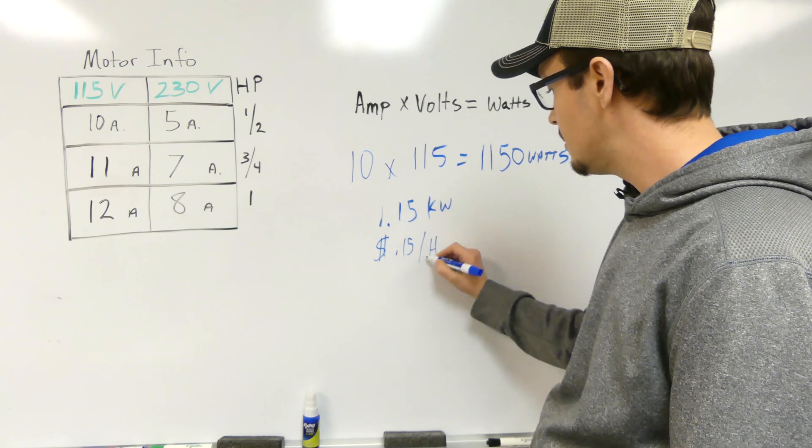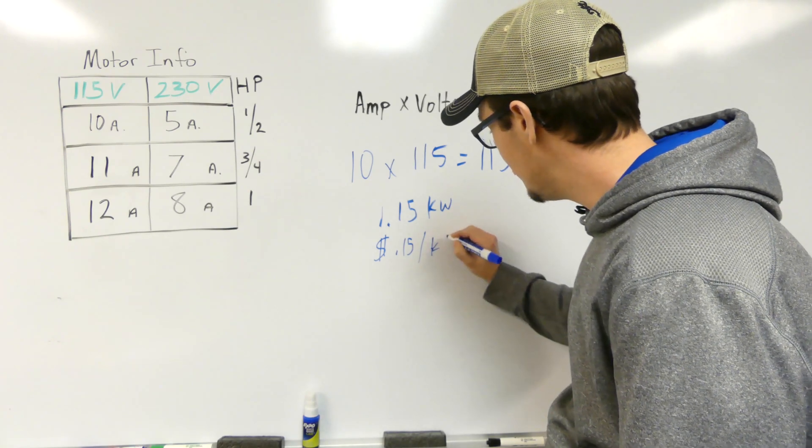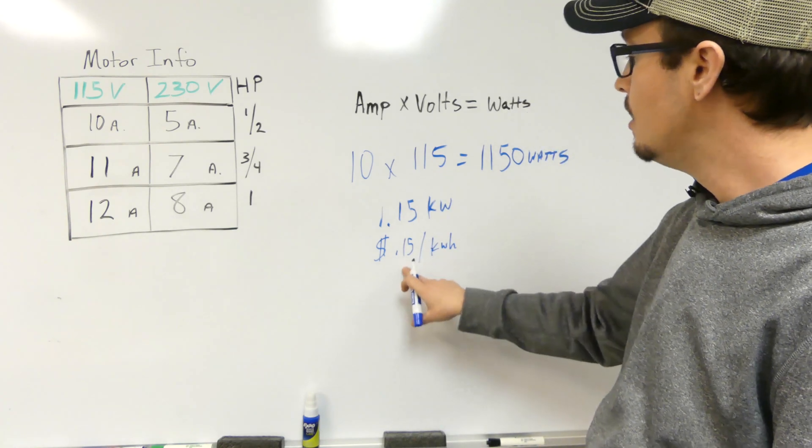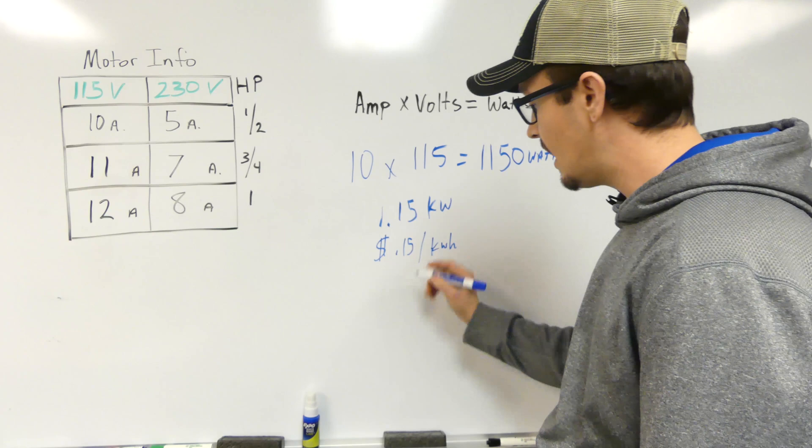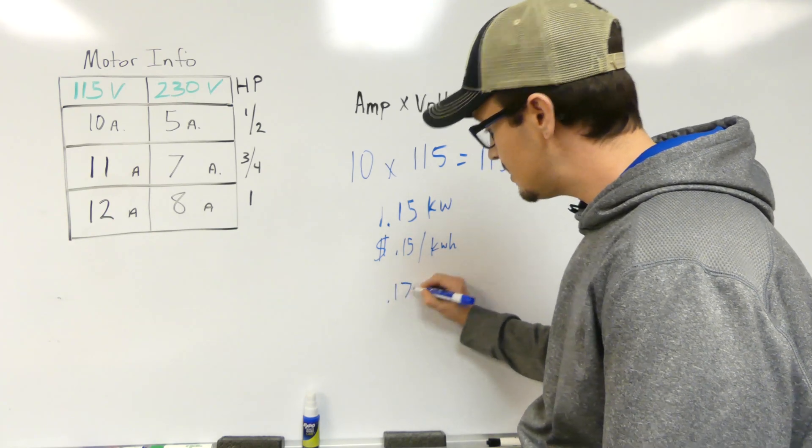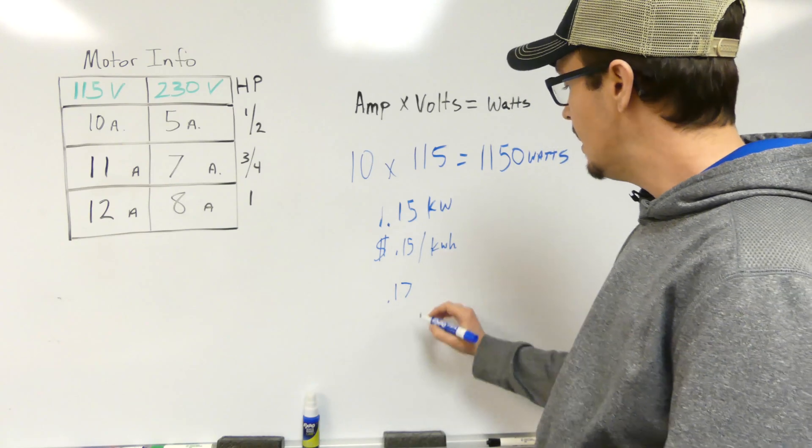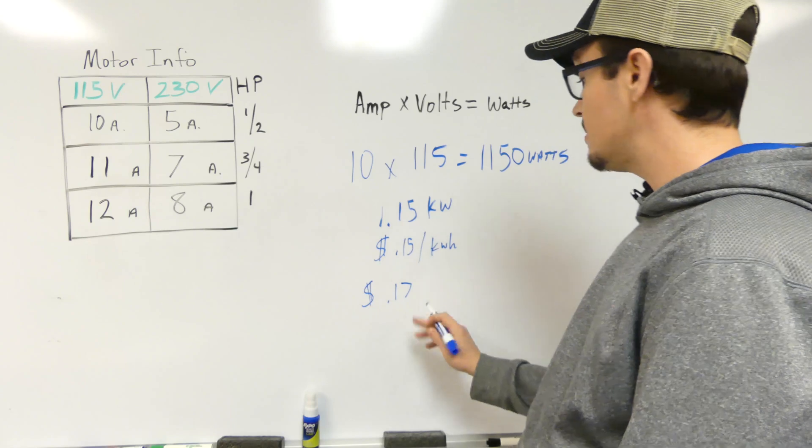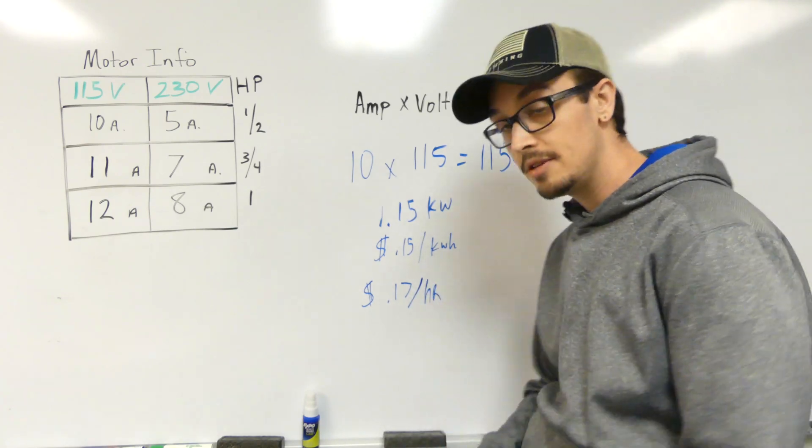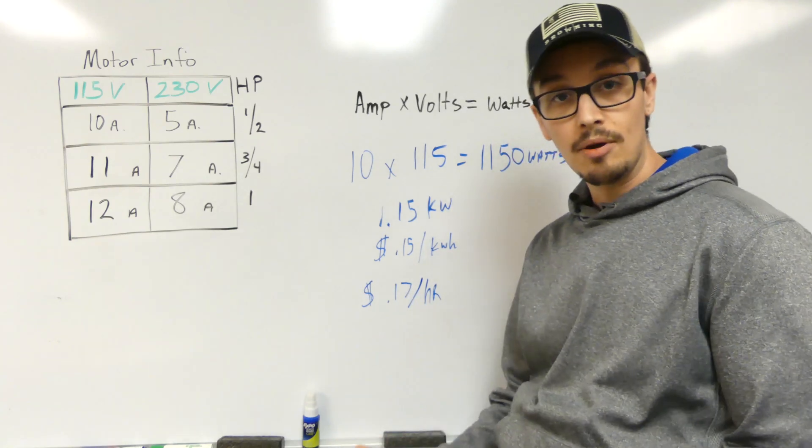So per kilowatt hour, we just multiply 0.15 by 1.15 and we get roughly 0.17, and we're going to just drop the other numbers that come on there. So 0.17, so 17 cents per hour to operate our 115 volt half horsepower pump.